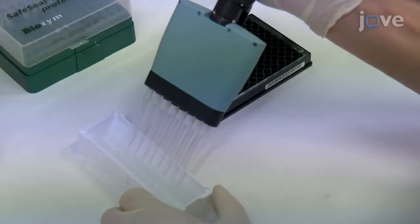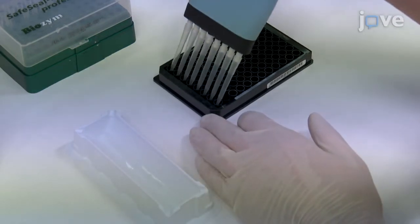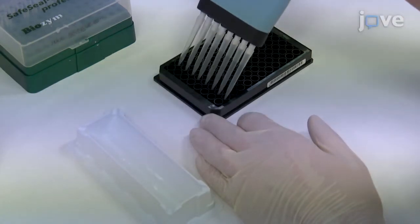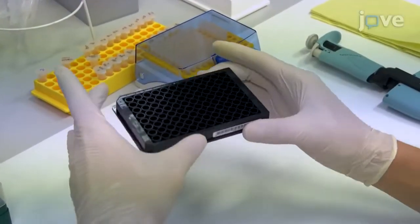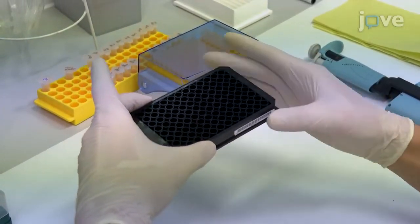To coat the 96-well high-bind plate, carefully dispense 25 microliters of coating solution into the bottom corner of each well using a multi-channel pipetter. Dab the 96-well plate gently on each side to ensure that the coating solution covers the bottom of each well.